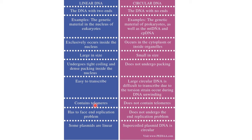Linear DNA contains telomeres, whereas circular DNA does not contain telomeres. Telomeres are the ends of a chromosome.